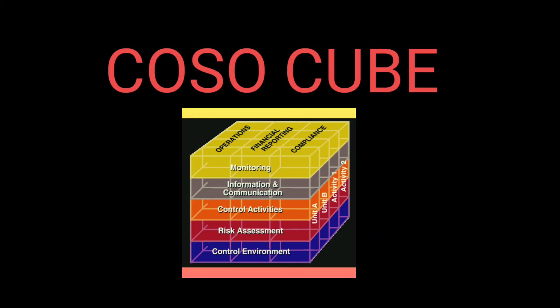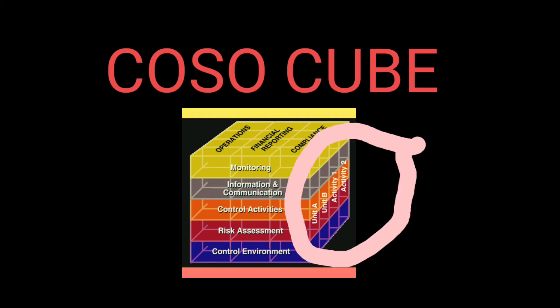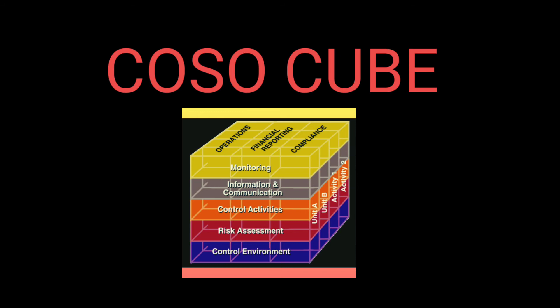The third dimension is the organizational structure, which has parameters such as entity level, division, operating unit, and function. This means that all five components — from control environment to monitoring activities — can be applied to an entire organization, or maybe just a division, a function, an operating unit, or at a very large entity level as well. Everything we have discussed helps in performing various operations, providing correct reporting, and adhering to compliance rules and regulations.